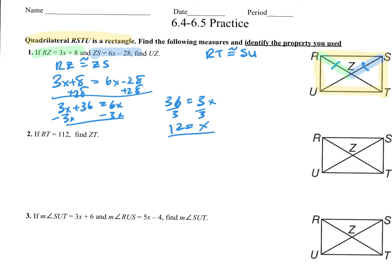We want to find UZ. So if X is 12, we just plug it in. UZ is another one of those legs — this is also congruent. All these diagonal segments are congruent, and because they bisect each other, they form small equal parts. So 3 times 12 plus 8 gives us 36 plus 8 equals 44. That is what UZ is equal to.